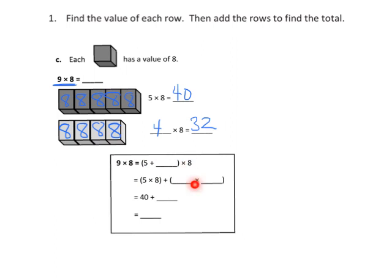And then down here, 9 has been broken up into 5 plus 4, and we're going to times by 8. So now that's really 5 times 8 plus, and that's this part right here, 5 times 8 plus what? Well, that's 4 times 8. So we're going to label that 4 times 8. And then 5 times 8 is 40, and 4 times 8 is 32.